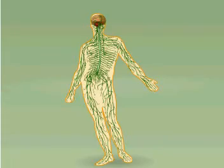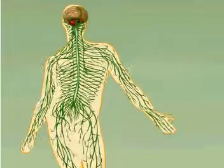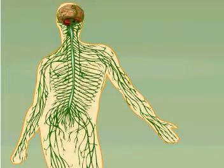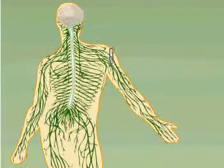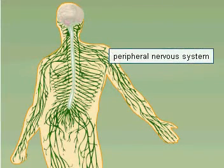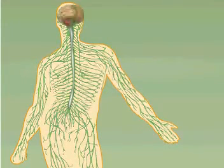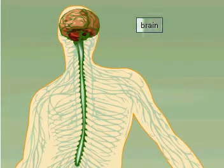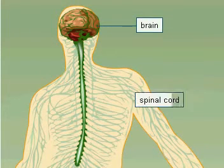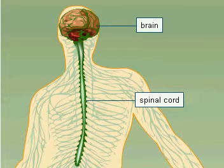The human nervous system is structurally divided into the central nervous system and the peripheral nervous system. The central nervous system consists of the brain, located inside the skull, and the spinal cord, located inside the vertebral column, or spine.